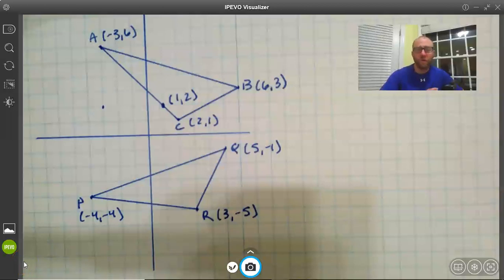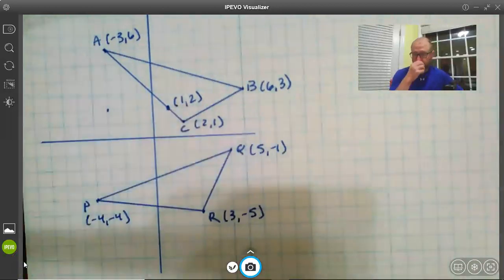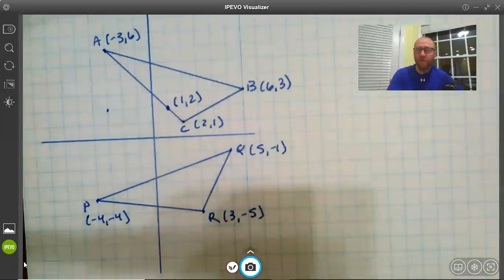Okay, so we've got two triangles here. They're congruent triangles and we've got this point on one of them and we're trying to figure out where is this point on the other triangle.